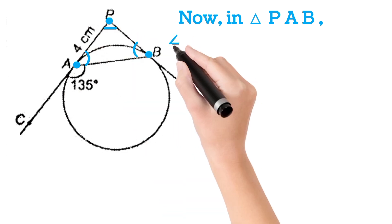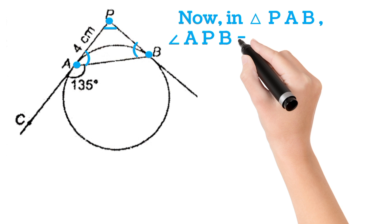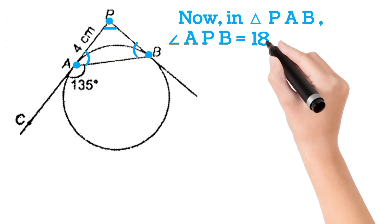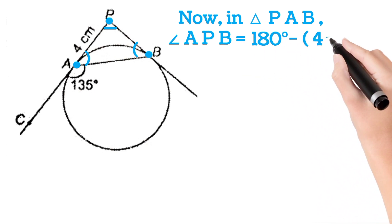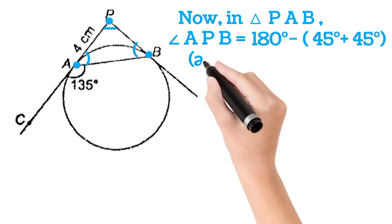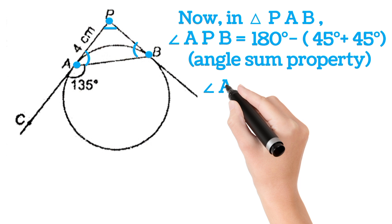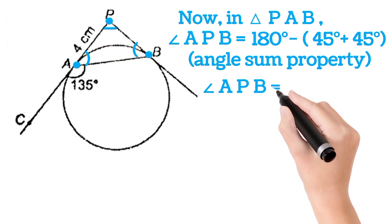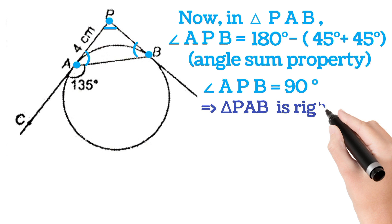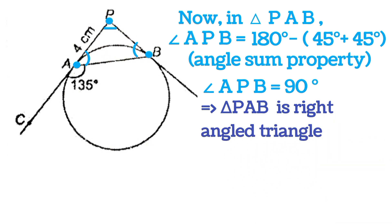So this angle, angle APB, will be 180 minus 45 plus 45 by angle sum property. So angle APB will be 90 degrees, so triangle PAB is a right angled triangle.